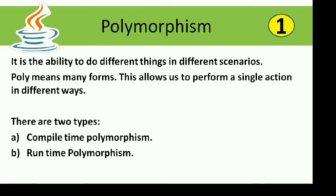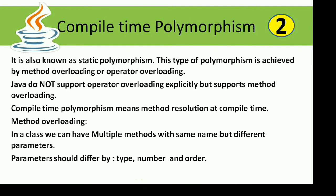Hello friends, welcome back. Today we will see what is polymorphism, a very important OOP concept. It is the ability to do different things in different scenarios. Poly means many forms, and there are two forms: one is compile time polymorphism and the other is runtime polymorphism. Compile time polymorphism is also called static polymorphism. This is achieved by method overloading or operator overloading. Java does not support operator overloading explicitly but supports method overloading.